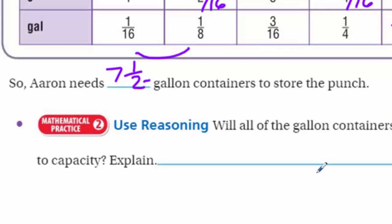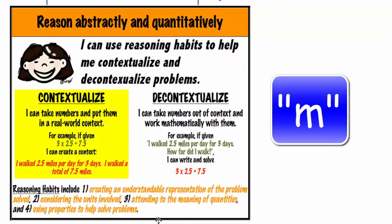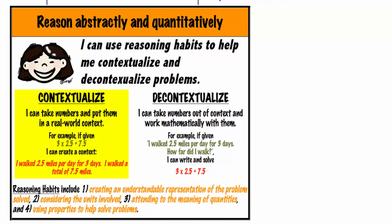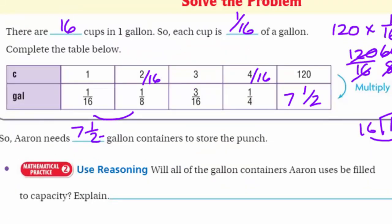Let's look at Mathematical Practice number two, which states we reason abstractly and quantitatively. It says: 'I can use reasoning habits to help me contextualize and decontextualize problems.' We can contextualize by taking numbers and putting them in a real-world context — for example, '3 × 2.5 = 7.5' becomes 'I walked 2.5 miles per day for 3 days, for a total of 7.5 miles.' Decontextualizing is the opposite: taking a word problem and putting it back into numbers.